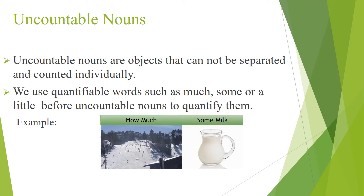Uncountable nouns are objects that cannot be separated and counted individually. We use quantifiable words such as much, some, or a little before uncountable nouns to quantify them. For example, much snow, some milk.